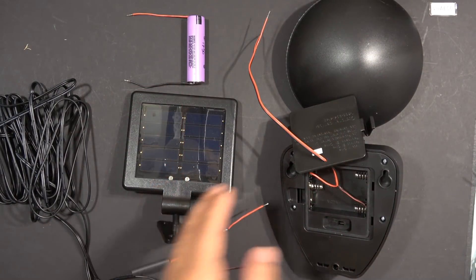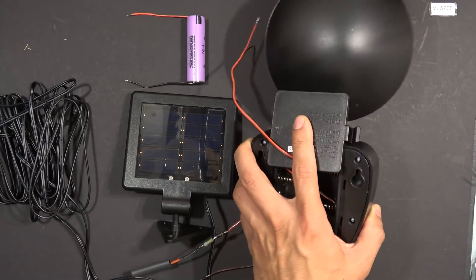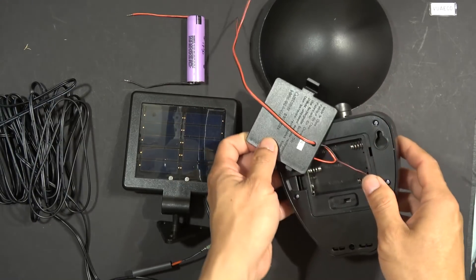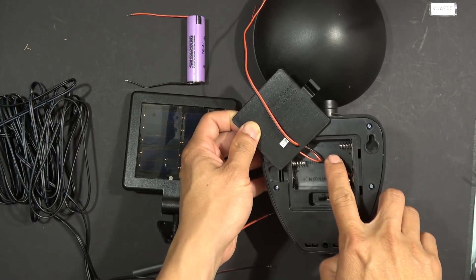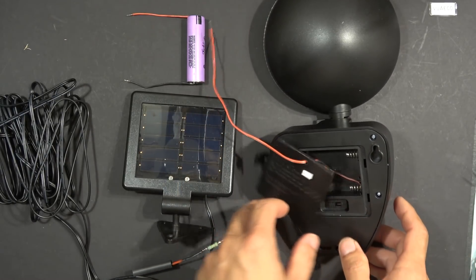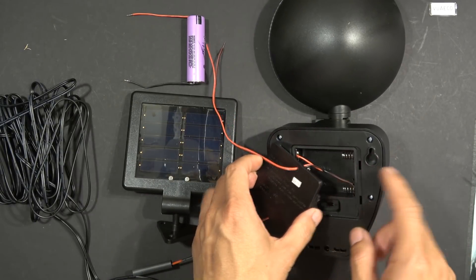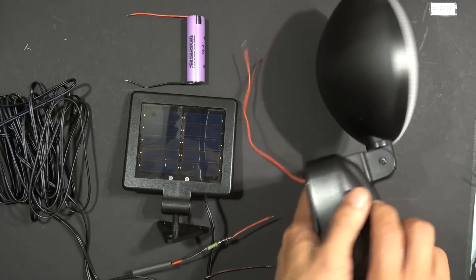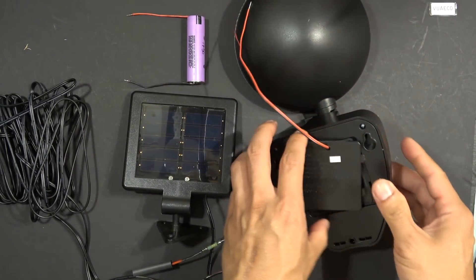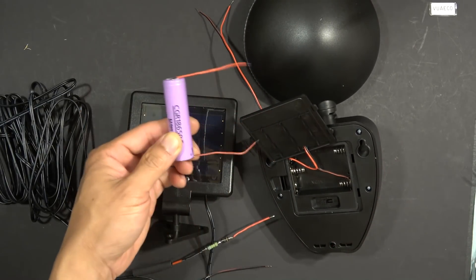This solar panel was originally designed for this light—a motion-activated LED light. On the back here it's got three spaces for three double-A size nickel metal hydride batteries. During the day, this solar panel will charge the nickel metal hydride batteries in here, and this light will work at night, motion-activated. But I'm not a big fan of nickel metal hydride batteries, so that's why I use this.